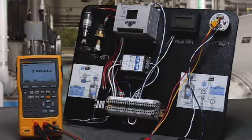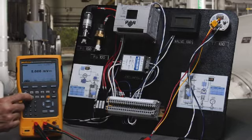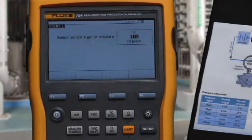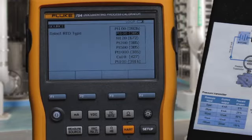Next, we want to configure the input to the transmitter, the RTD source of the calibrator. Select thermocouple RTD and RTD, PT100385.